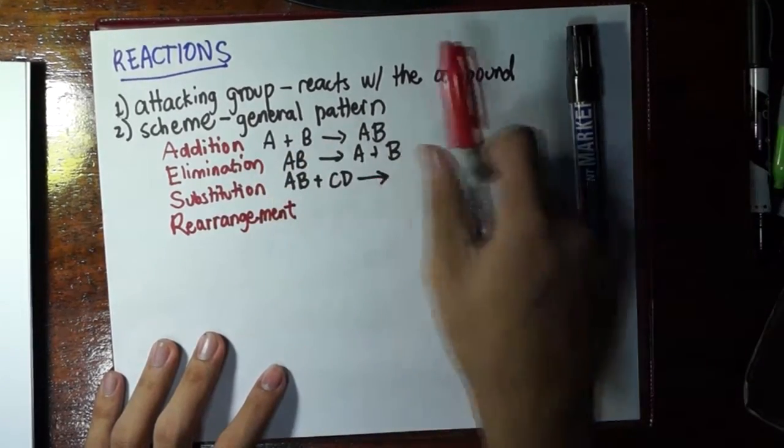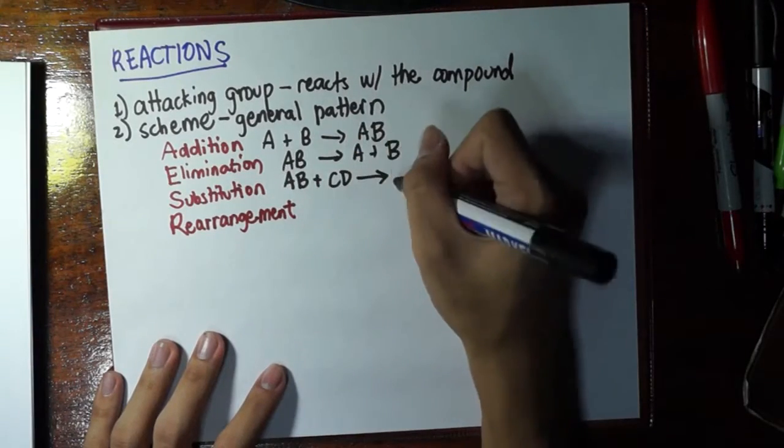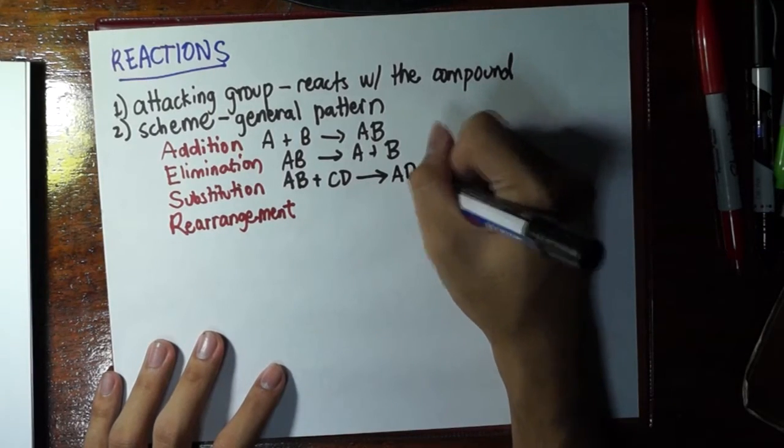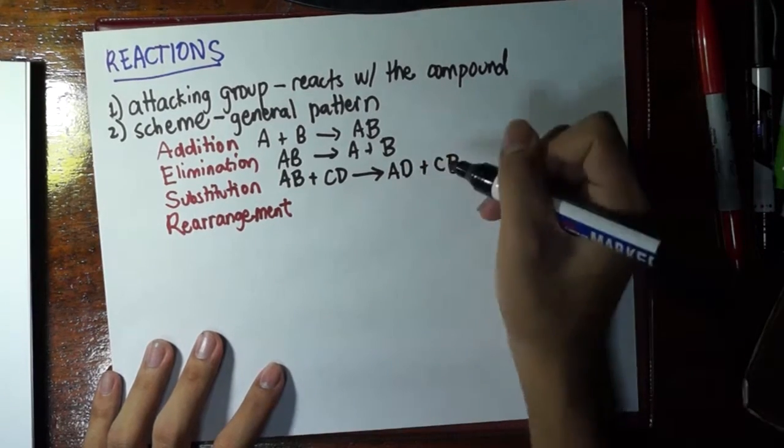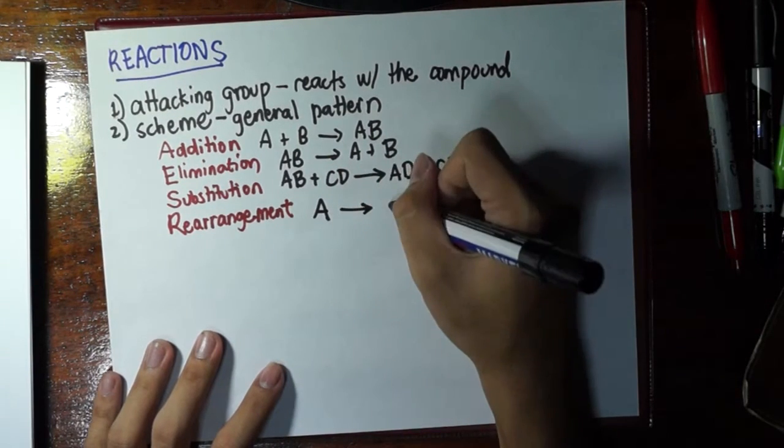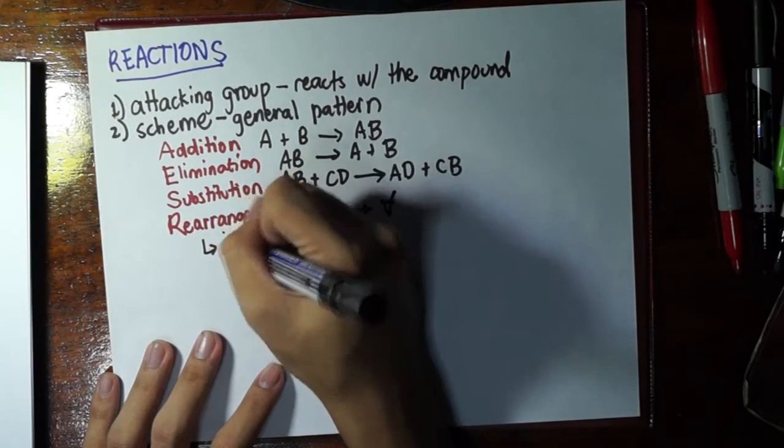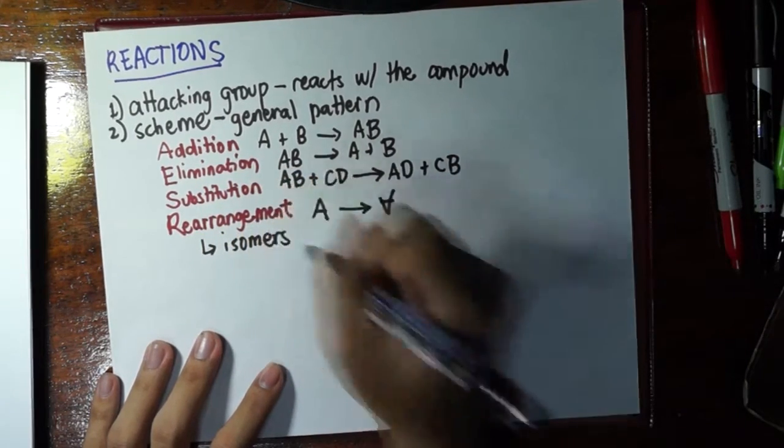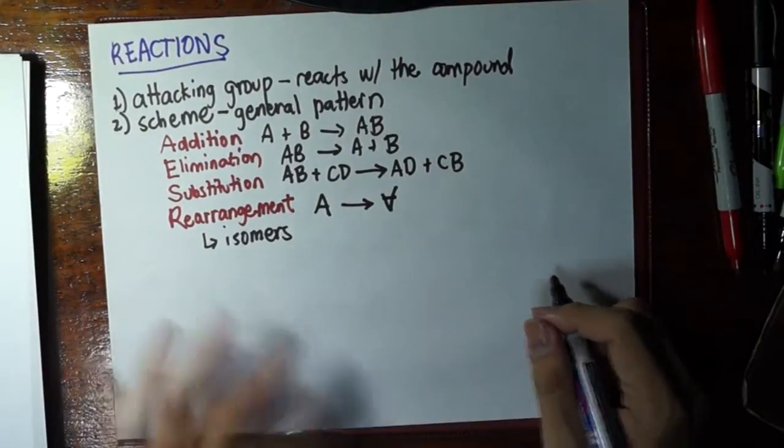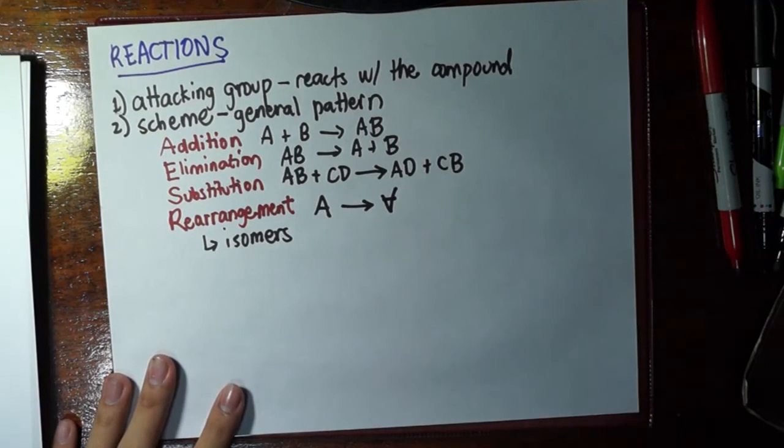And the fourth is rearrangement. For example, I always depict this in this manner. By the way, in substitution, if we have AB and CD, then we just exchange them to get AD plus CB. And in rearrangement, if I have A looking like this, it goes to a different arrangement or conformation. Because this is for isomers. This is when one isomer turns into another. That's called rearrangement reaction or rearrangement in scheme.